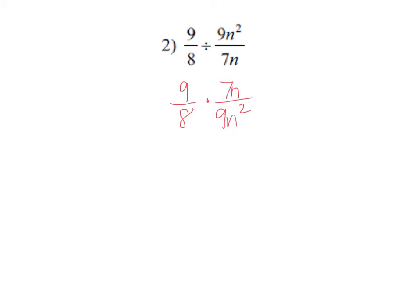I'm going to change this to 9/8 times, and then I flip that second fraction. Now let's look and see if there's any reducing we can do before we keep going. I have a 9 on the top and a 9 on the bottom. I have an n to the first and an n to the second.